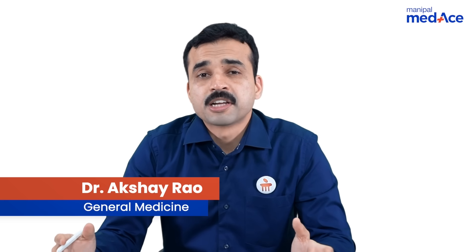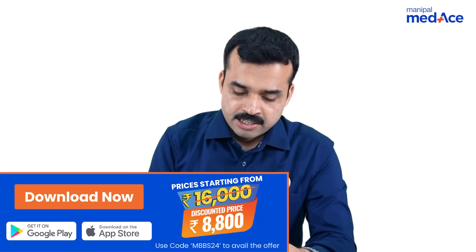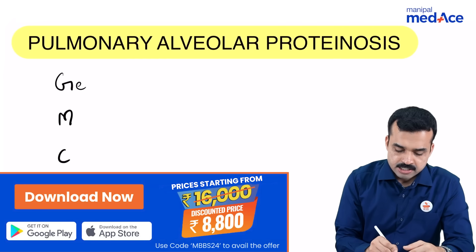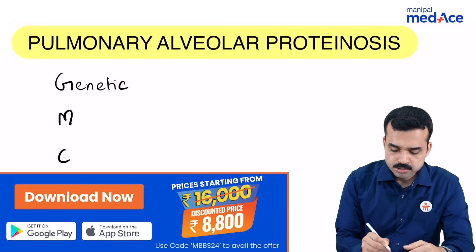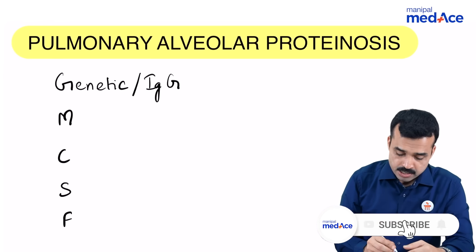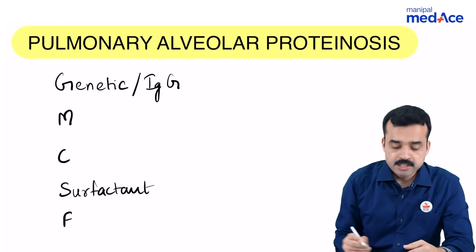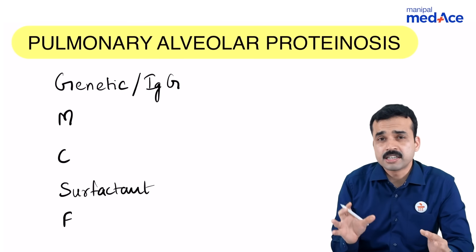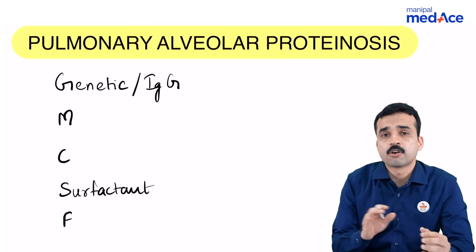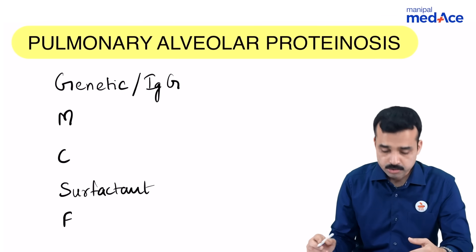Students, you all know that pulmonary alveolar proteinosis is a type of interstitial lung disease. In this, there is going to be either a genetic mutation or the production of autoantibodies, most commonly of IgG subtype, which will lead to an excessive accumulation of surfactant. And this is what leads to the development of very protein-rich fluid within the alveoli of the lungs — and that's why the name pulmonary alveolar proteinosis.